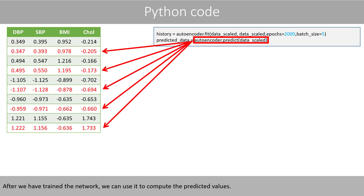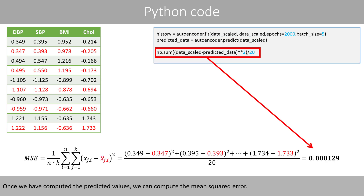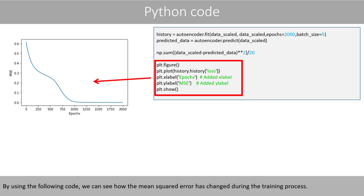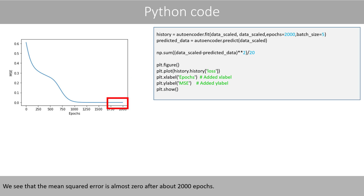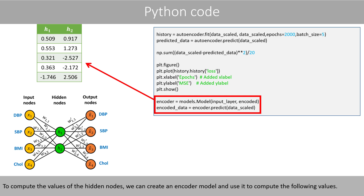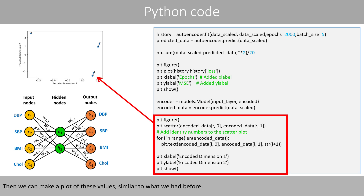After we have trained the network, we can use it to compute the predicted values. Once we have computed the predicted values, we can compute the mean squared error. By using the following code, we can see how the mean squared error has changed during the training process. We see that the mean squared error is almost zero after about 2000 epochs. To compute the values in the hidden nodes, we can create an encoder model and use it to compute the following values. Then we can make a plot of these values, similar to what we had before.